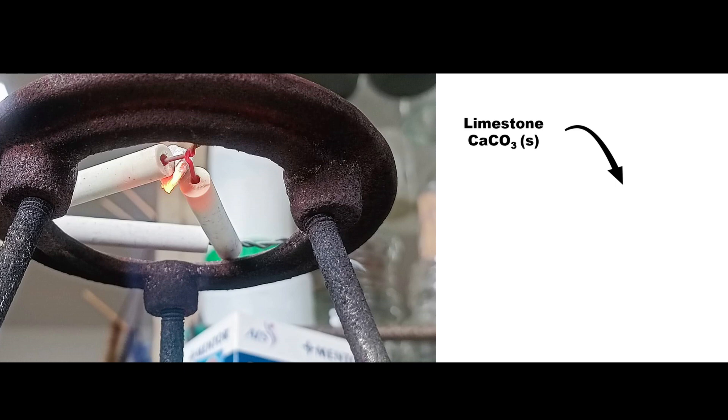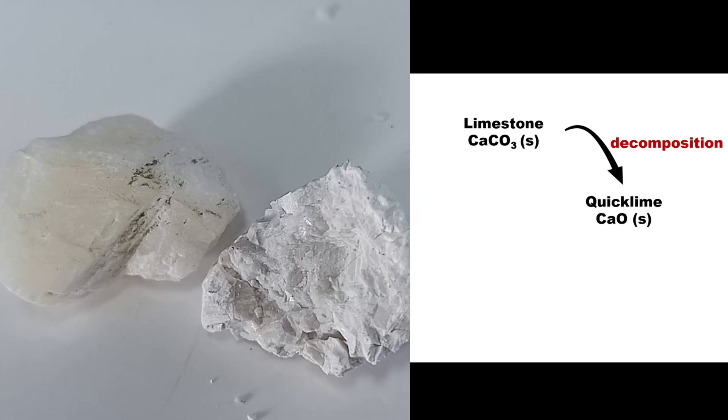The calcium carbonate undergoes thermal decomposition to produce calcium oxide, or quicklime. We can see the difference in the appearance before and after the reaction. The product is then let cool to room temperature.